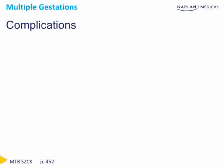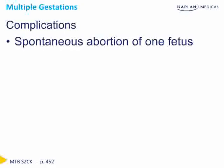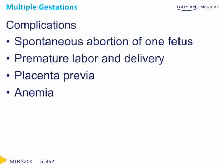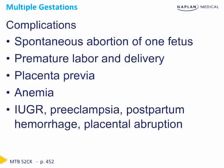There are a number of complications which can occur with multiple gestations. Spontaneous abortion can occur in one fetus while the other continues to live. Compared to singleton pregnancies, preterm delivery occurs quite often: singletons average delivery at 40 weeks, twins at 37 weeks, triplets at 33 weeks, and quadruplets at 29 weeks. Placenta previa is significantly more common with multiple gestations, as is anemia given the increased iron demands of two fetuses. Other common complications include intrauterine growth restriction, preeclampsia (which is three times more likely with twins), postpartum hemorrhage, and placental abruption.